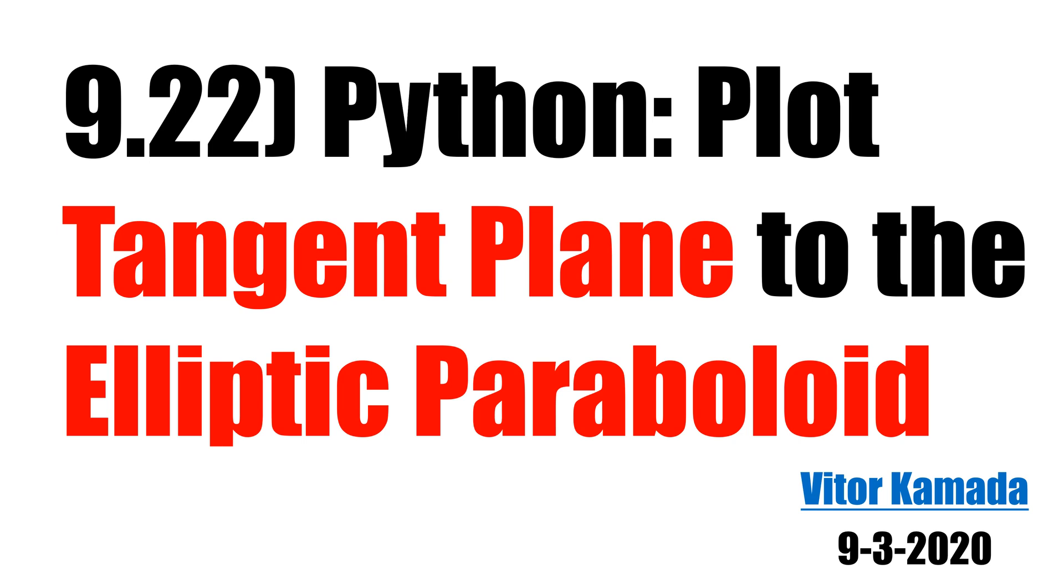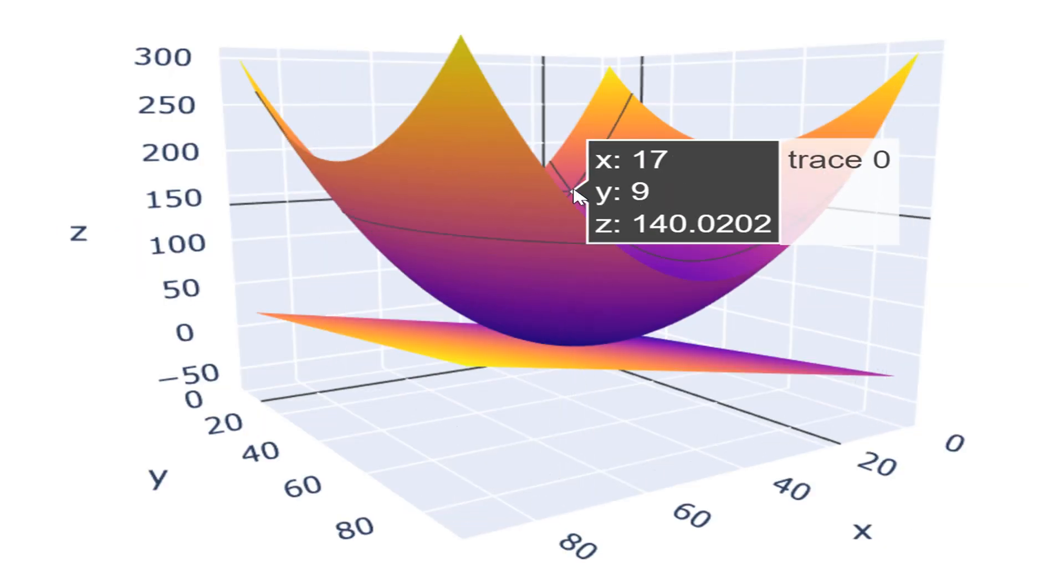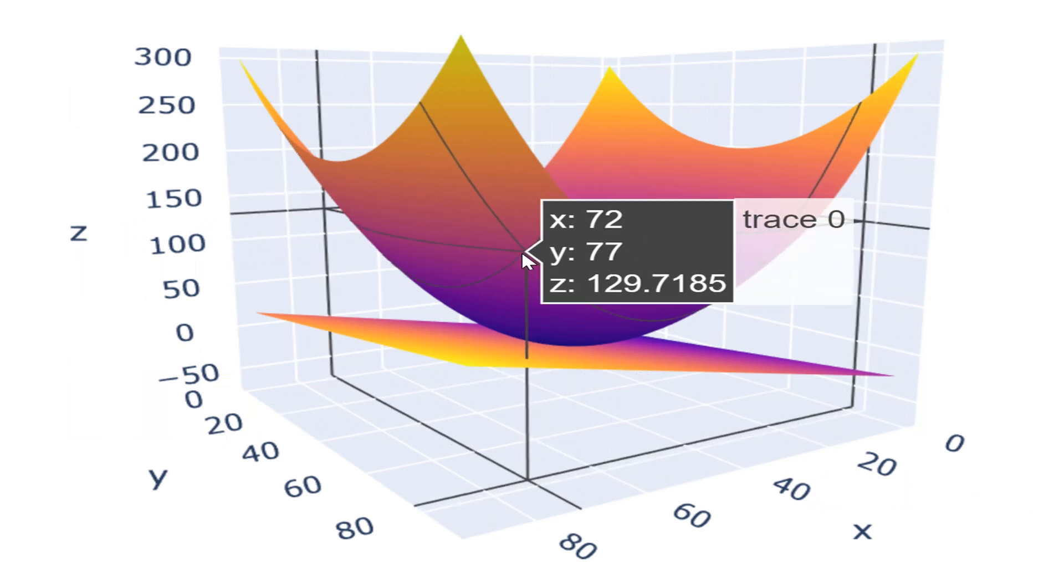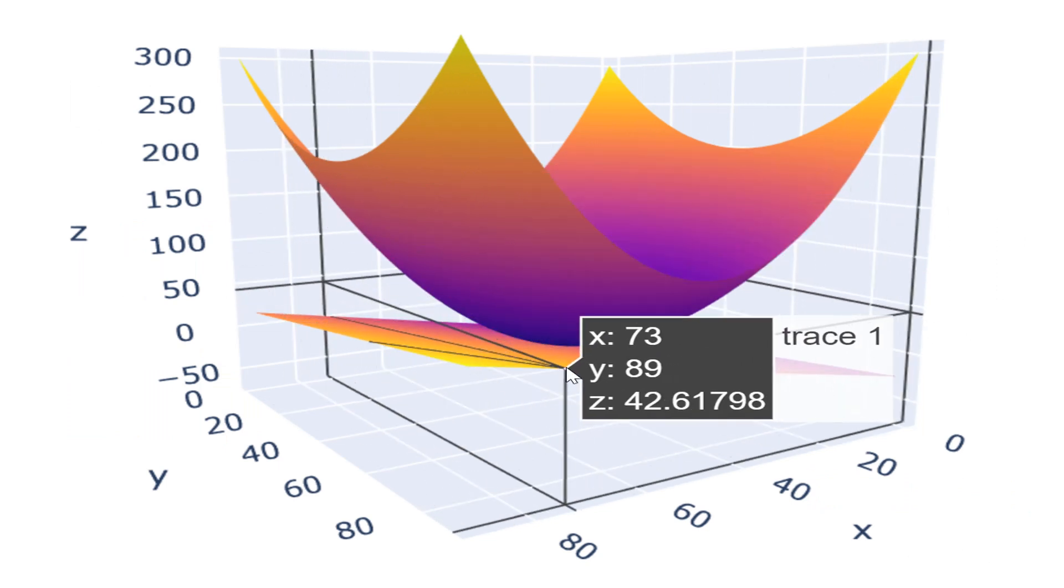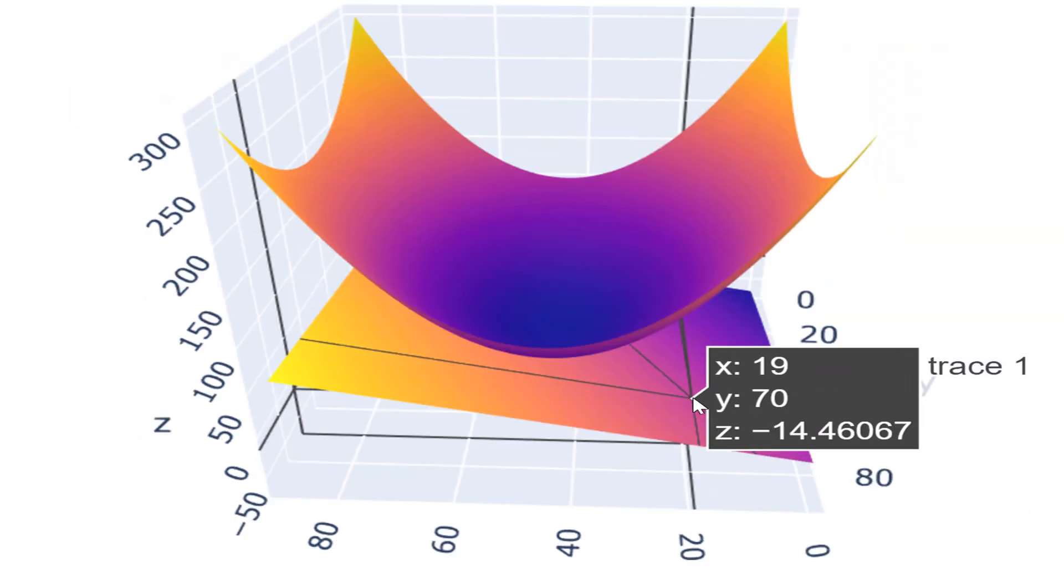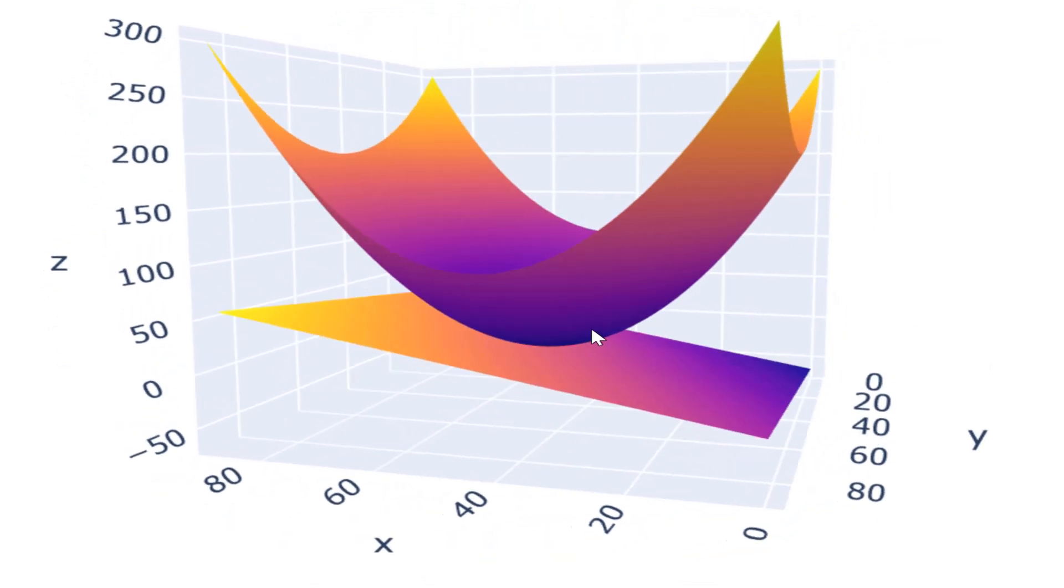Let's learn how to plot some nice charts. This is the paraboloid and this is the tangent plane to the paraboloid. See that you can rotate the chart.